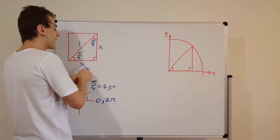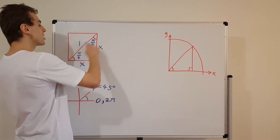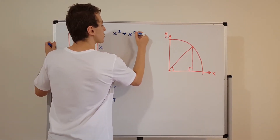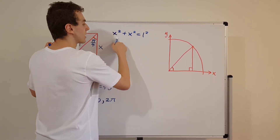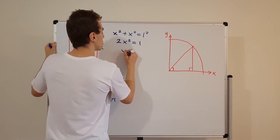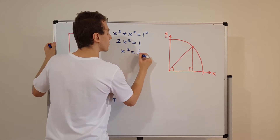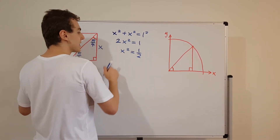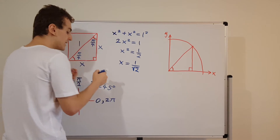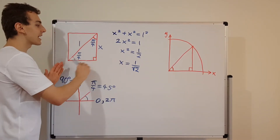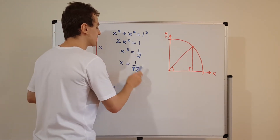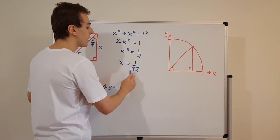We have x squared plus x squared equals 1 squared, since the hypotenuse has unit length. There are two copies of x squared, giving us 2x squared equals 1. So x squared equals 1 half if we divide both sides by 2. Taking the square root gives us x equals 1 over root 2. We only consider the positive solution because a negative length does not make physical sense in this geometric picture.